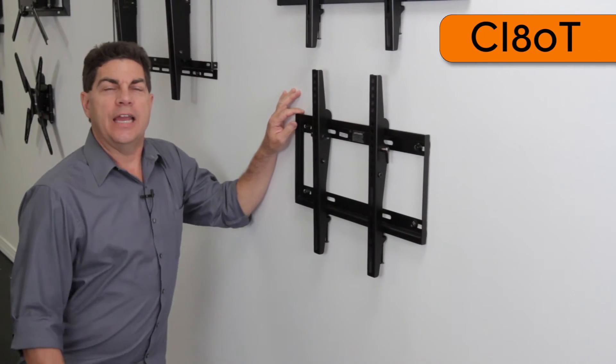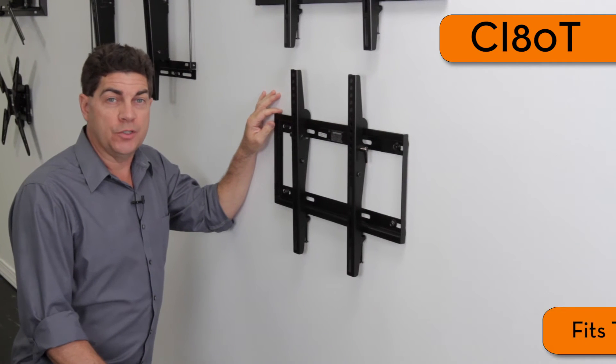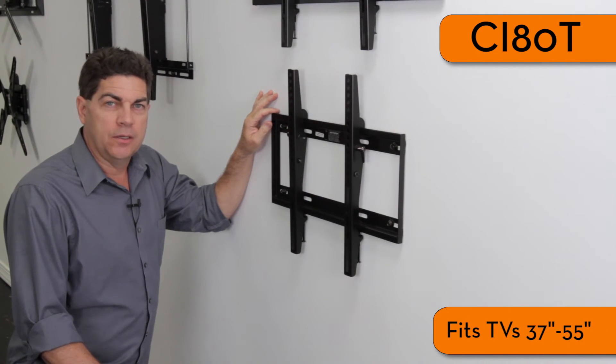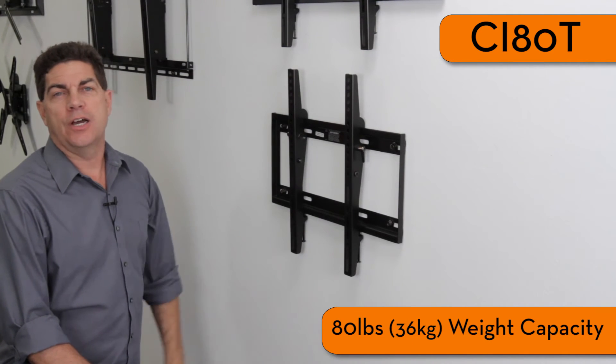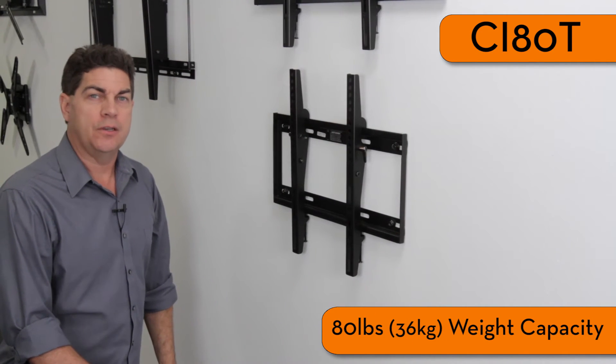The CI-80T has a 1.6 inch mounting profile and is VESA compliant up to 400 by 400. The entire CI line is UL tested and approved.